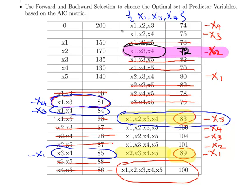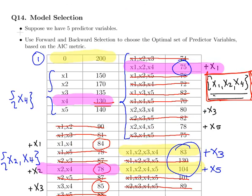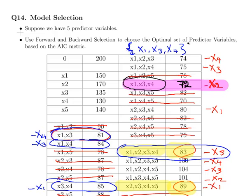Let's think about this for a second. When we did forward selection we got X1, X2, and X4. When we did backward selection we got X1, X3, and X4. So the two methods produced different combinations of predictor variables. This is an important point about forward and backward selection — quite often it's entirely conceivable that the set of predictor variables chosen by both methods will be different.